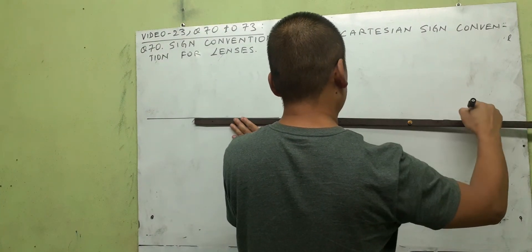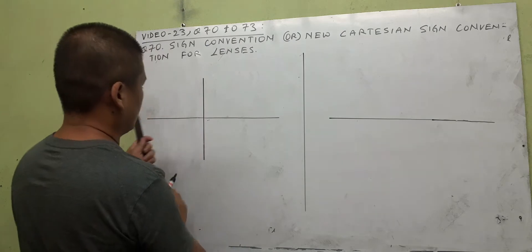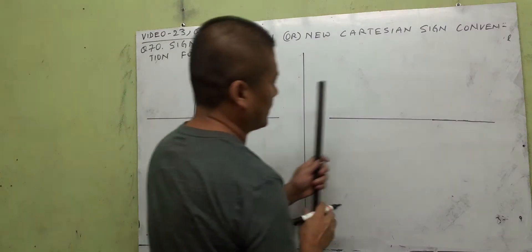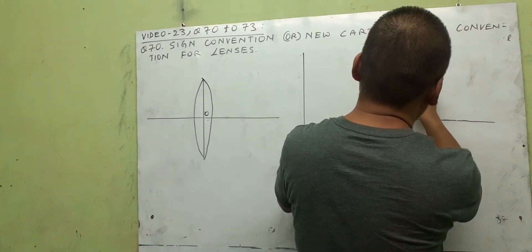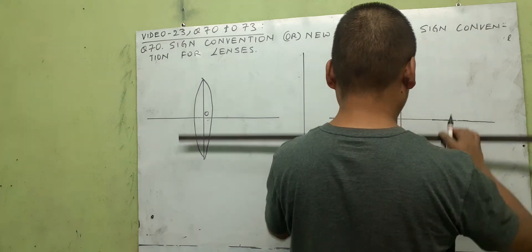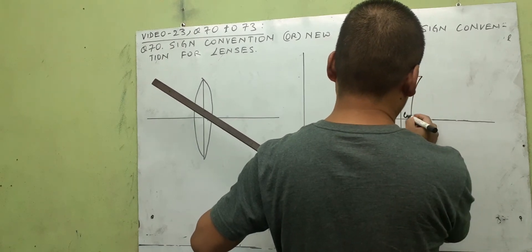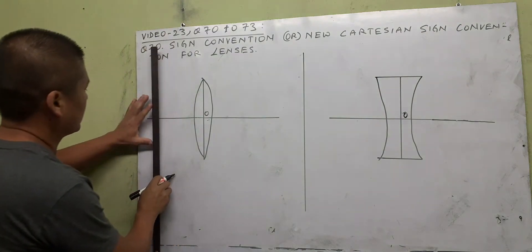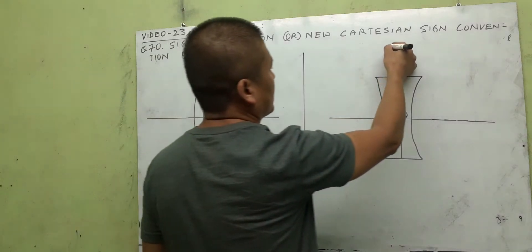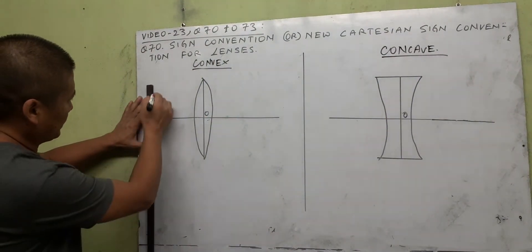On the right we draw a concave lens. Draw a simple convex lens with the optical center marked, and a simple concave lens with its optical center. Then place an object — the left side represents your convex lens and the right side represents your concave lens.